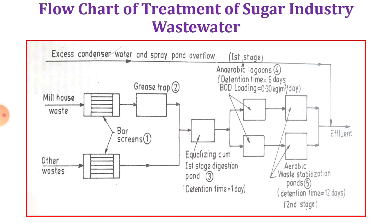This is the typical flowchart for treatment of sugar industrial wastewater. Wastewater from the mill house and other sources is first passed through a bar screen. Water from the mill industry is also passed through a grease trap, because the milling plant involves greasing and the wastewater may contain waste greases.